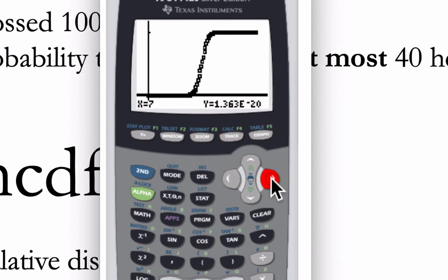So if I go to trace, I can scroll along and see any input-output pair that I want on this graph. And here is the probability of getting at most 52 heads—it's about almost 70%. All right, hope this helped.